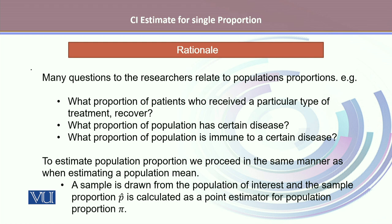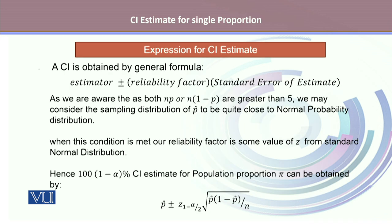In these types of cases, our goal is to estimate the population proportion. We proceed in the same manner as when estimating a population mean. A sample is drawn from the population of interest and the sample proportion, p-hat, is calculated as a point estimator for the population proportion, denoted by pi.